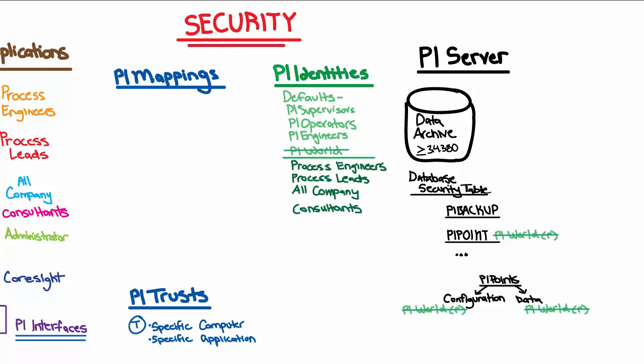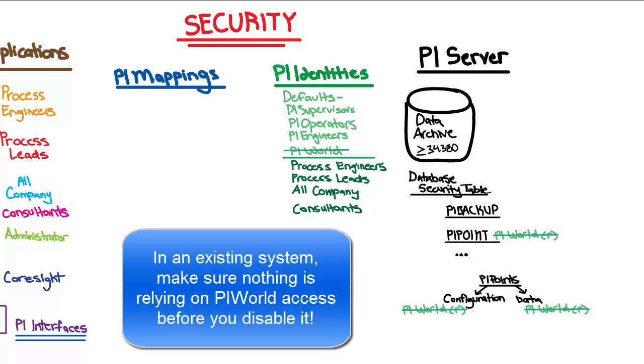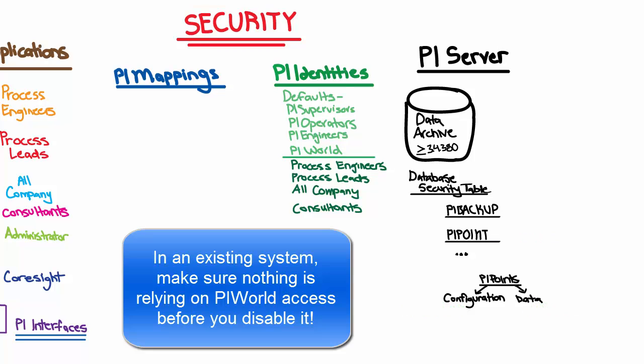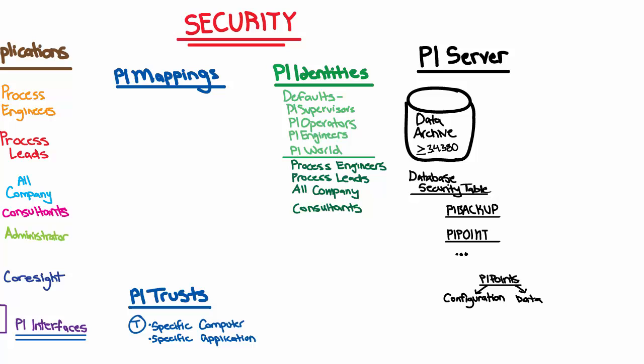Disabling PI World is not something you should do lightly. In a new system, you should certainly consider disabling PI World because you don't have any pre-existing connections, users, or applications that are relying on PI World access. However, in an existing system, disabling PI World could unintentionally lock down areas of access, which would be dangerous. It can be tricky to determine which users or applications might be relying on PI World access. In these situations, it is absolutely important to make sure you have moved all users or applications away from using PI World before you disable it. For more details, definitely consult the documentation.